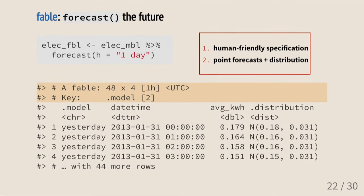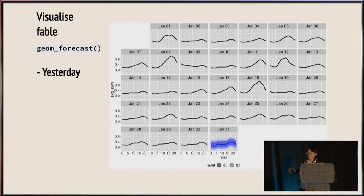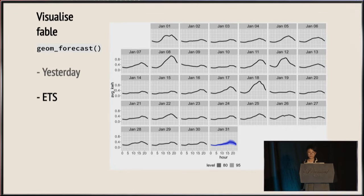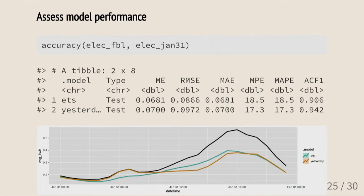You can see the normal distribution with its mean and standard deviation in the last column, dot distribution. You can produce any level of prediction interval you like, and we can see forecasts more clearly with plots using geom_forecast. The naive method repeats yesterday's pattern but with very large 80% and 95% prediction intervals, some even going below zero. ETS nicely captures the daily trend and produces much narrower prediction intervals. Using the accuracy function to compare with the test set, ETS does slightly better than naive in terms of RMSE, but both tend to give underestimated predictions — looks like another hot day in January.